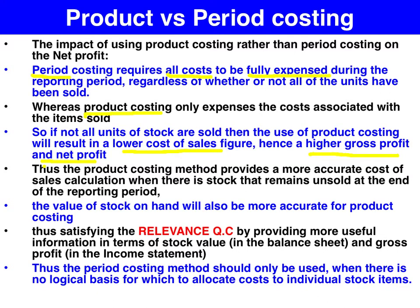The product costing technique provides a more accurate measure of cost of goods sold because it only expenses the items that have been consumed in generating sales. So therefore, we get a more accurate profit and a more accurate value of our stock on hand in terms of the future economic benefit that it provides. Thus, we satisfy the relevance qualitative characteristic.